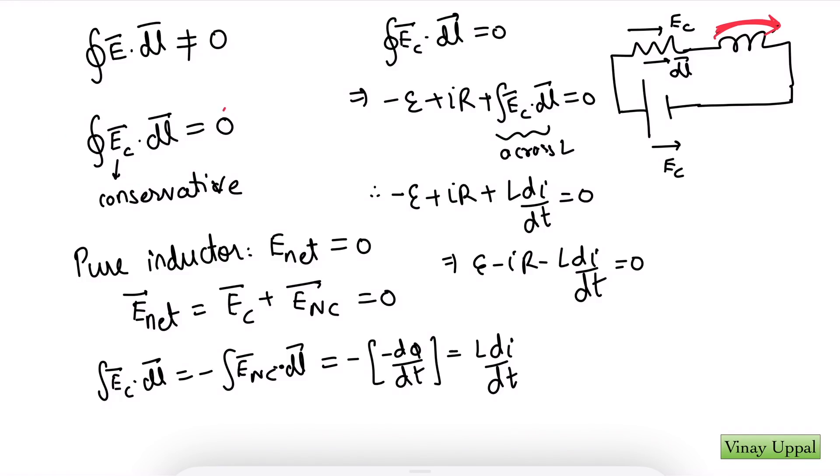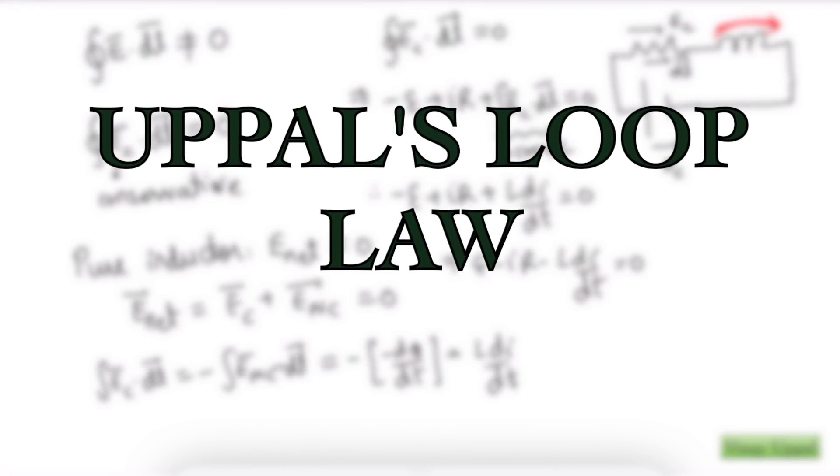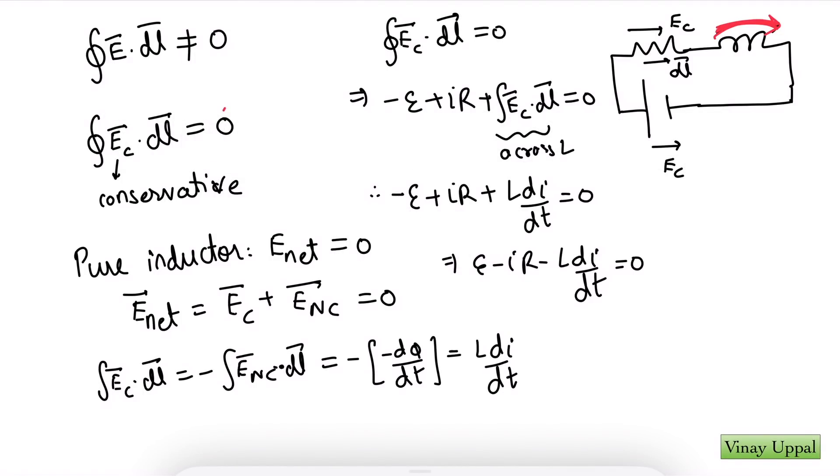And whether you want to call this as Kirchhoff's loop law or whether it's simply loop law, the name doesn't really matter. In fact, go ahead and call it by my name. Go ahead and call it Uppal's loop law. I don't mind. I'll be very flattered. But the point is you understand that loop law is not E dot dl is zero. It is E_conservative dot dl is zero. So as long as you understand that it's perfectly fine to use loop law.